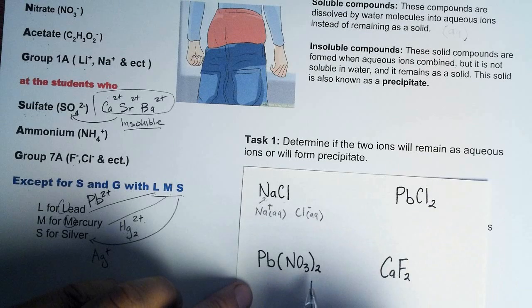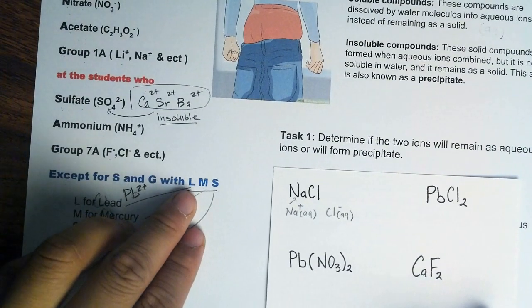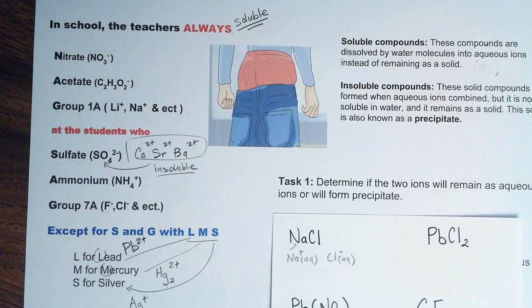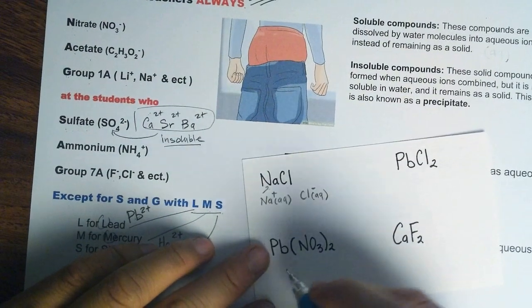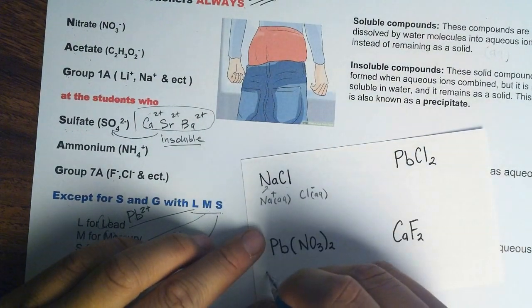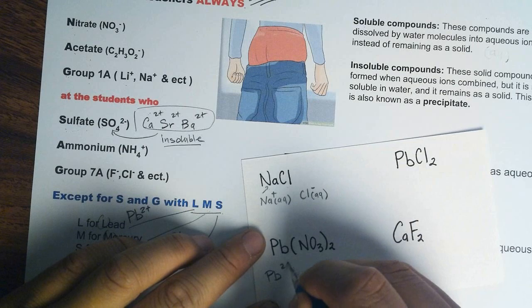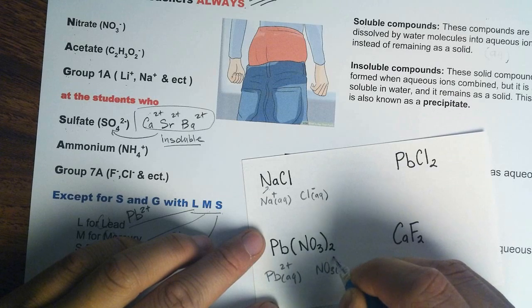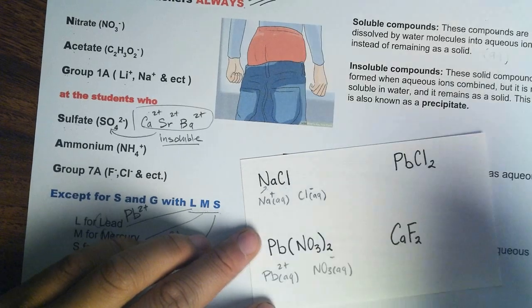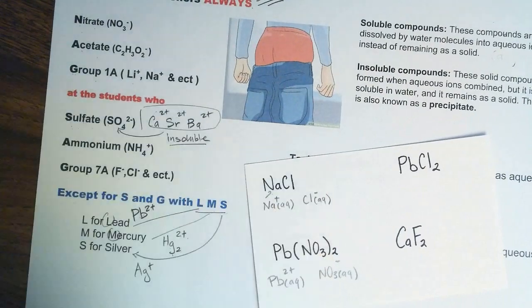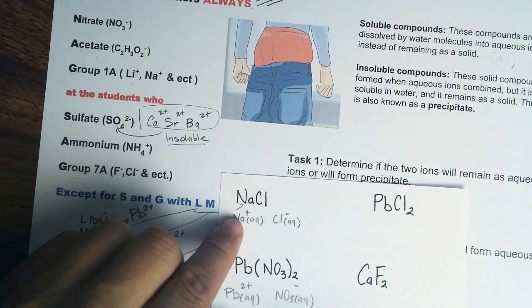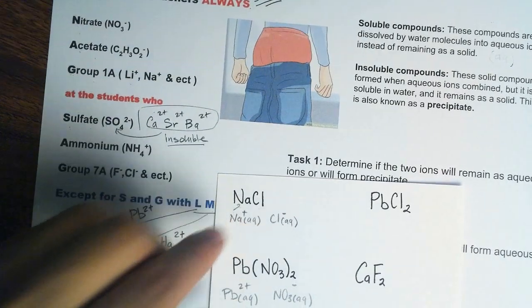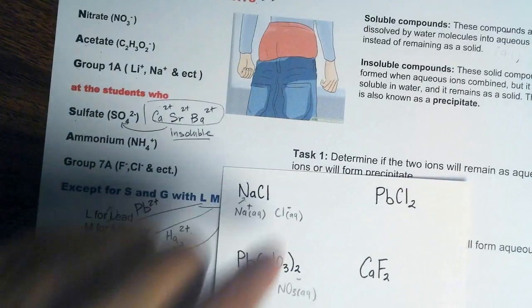What about lead nitrate? Remember, we have the exception with lead (LMS), but in this case we go back to rule number 1 — nitrate. Any compound with nitrate will always be soluble. So therefore it will form aqueous ions: Pb2+ aqueous and NO3- aqueous. So instead of being a solid, it will form two separate ions, just like sodium chloride. When you put table salt in water, it disappears — it is being dissolved into aqueous ions.